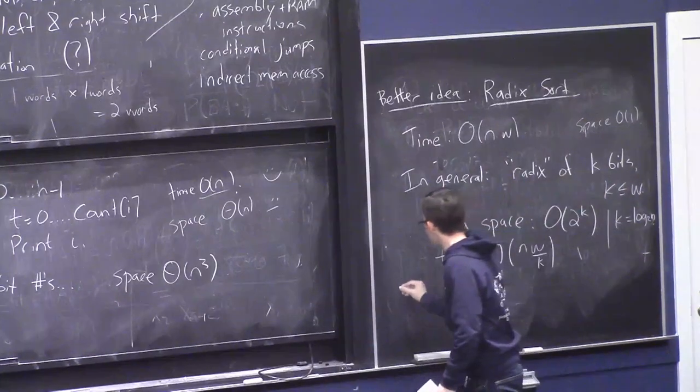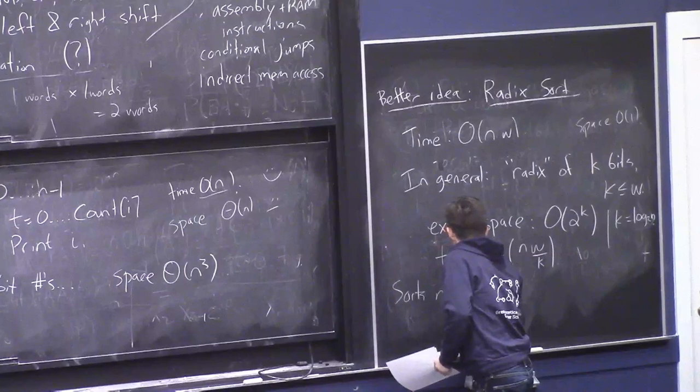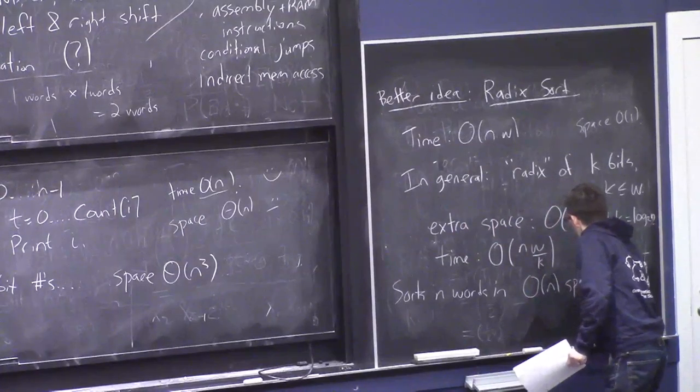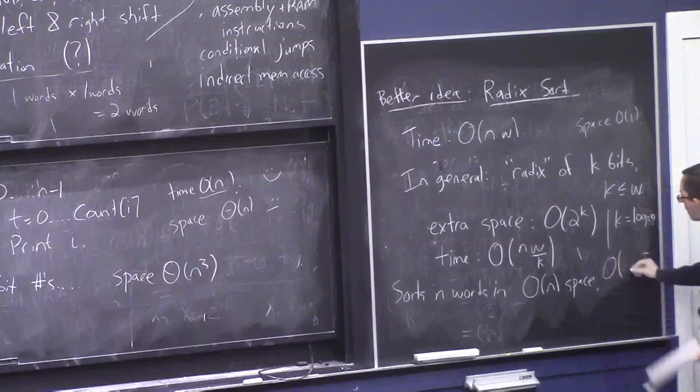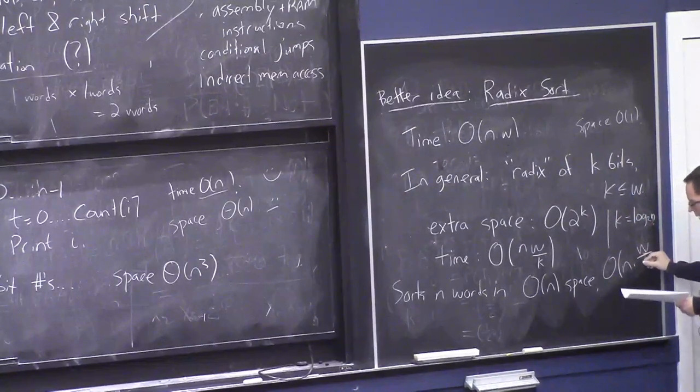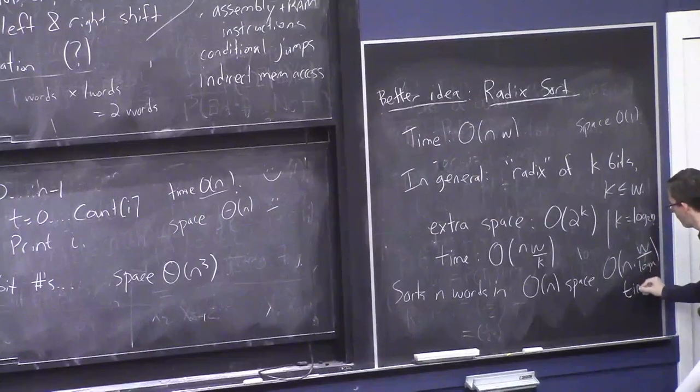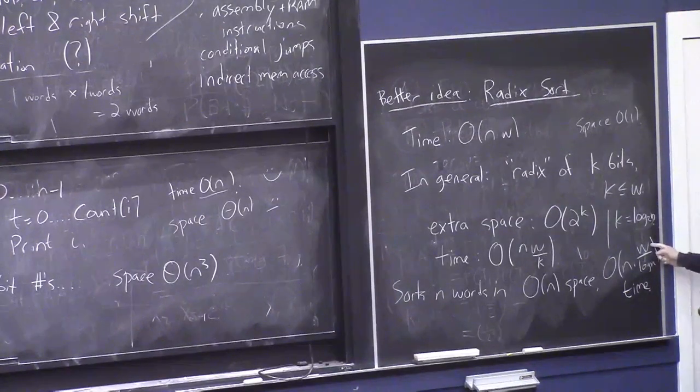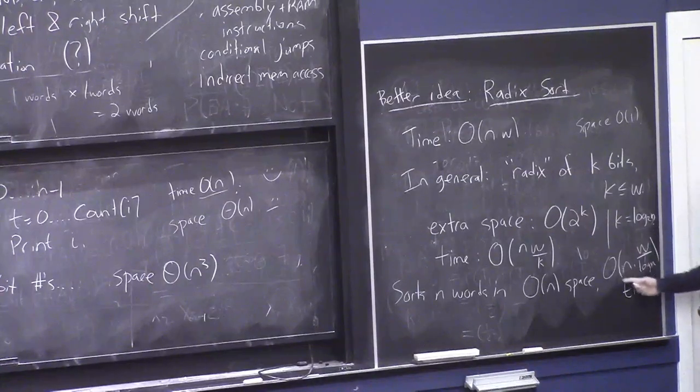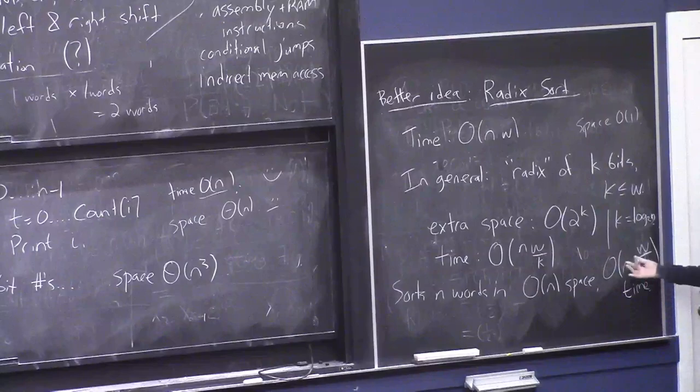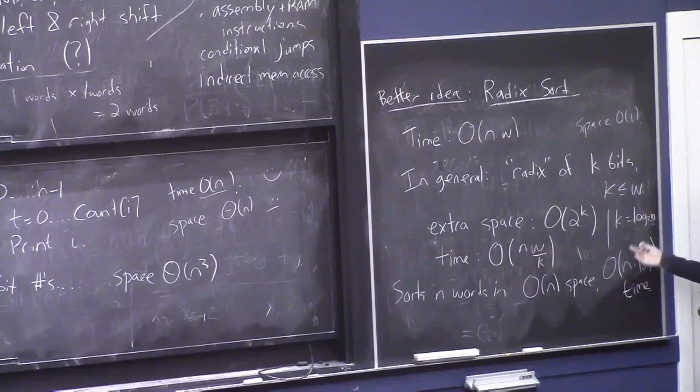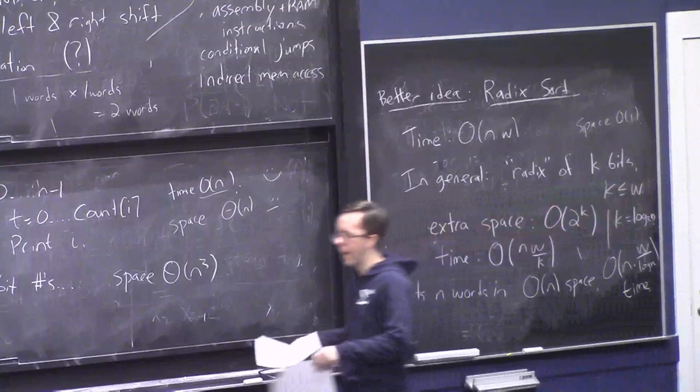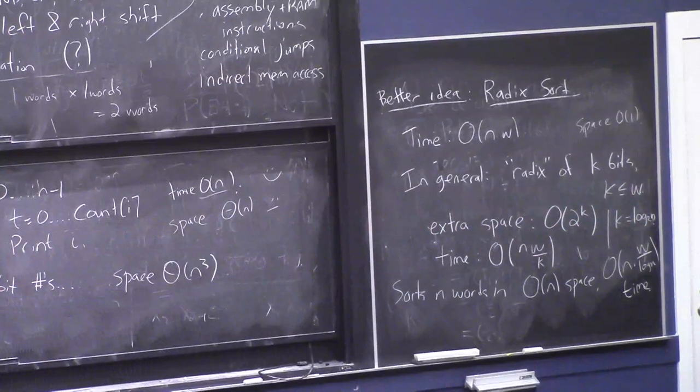And order, sorry, I'm running out of actual space here, n times w over log n time. And that's nice because in the usual setting I prefer where w is maybe 10 times log n, or it's order log n, this will be linear time and linear space. So this gives a very pleasant and basically ideal sorting algorithm, order n space, order n time, for any word size that's at most big O of log n. Any questions about that?